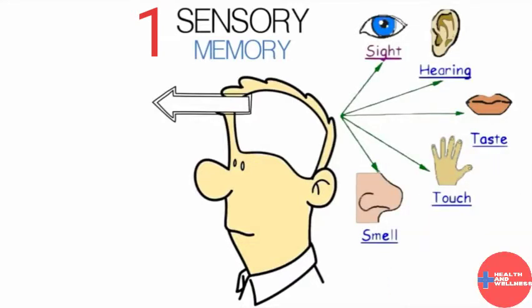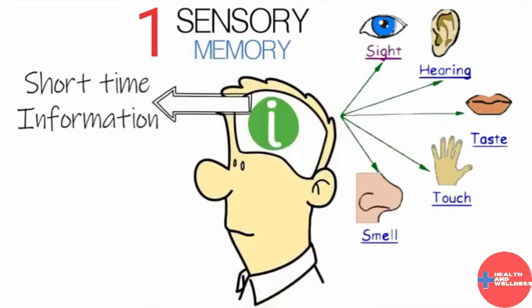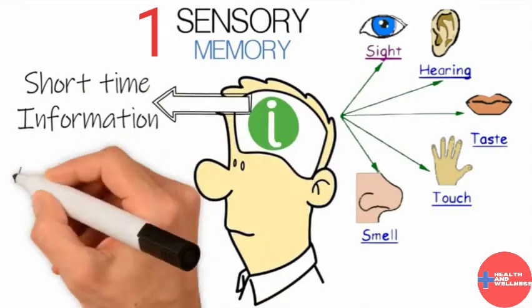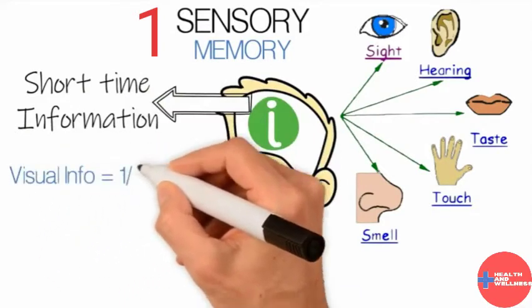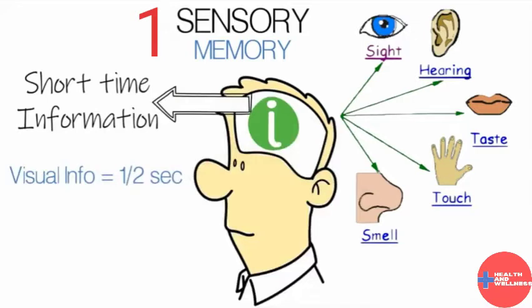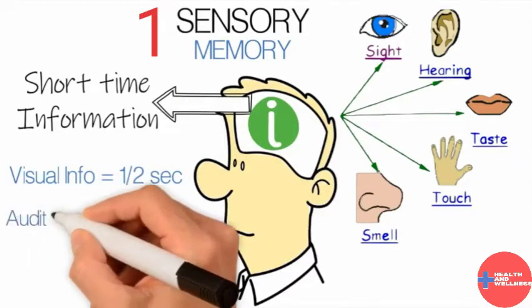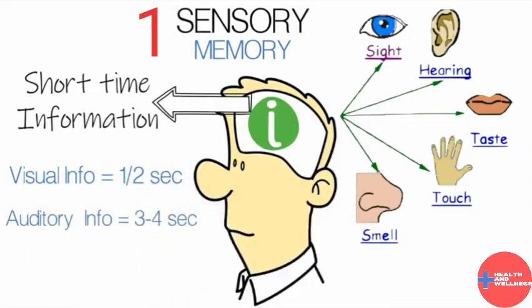Sensory memory can take a lot of information, but information is stored for only a very short time, with visual information being stored for less than half a second and auditory information being stored for only three to four seconds.